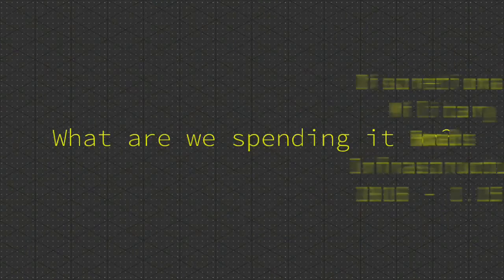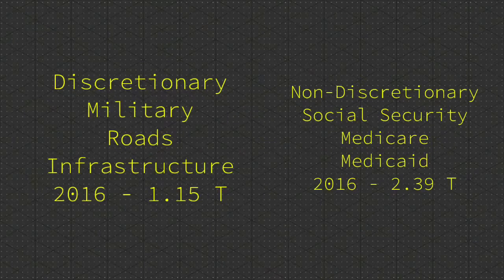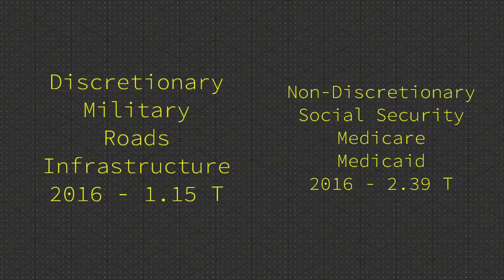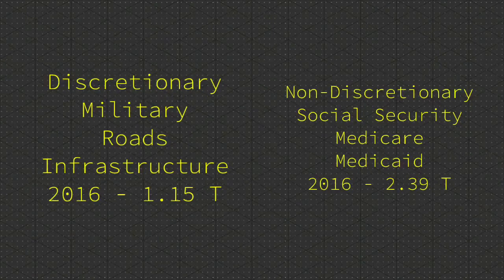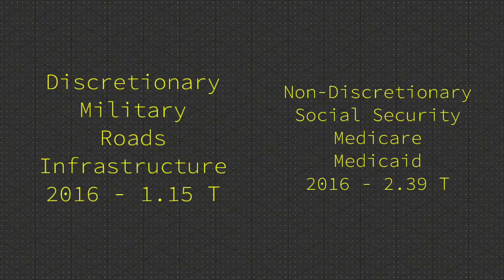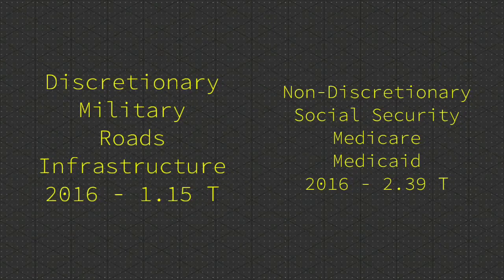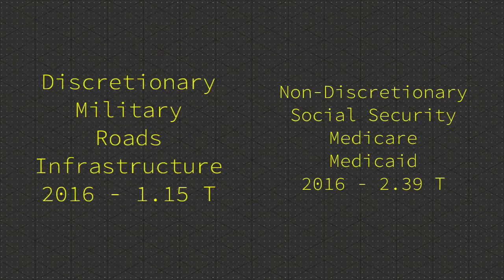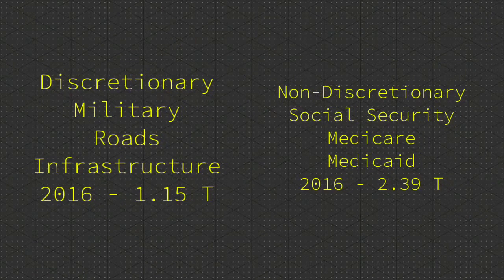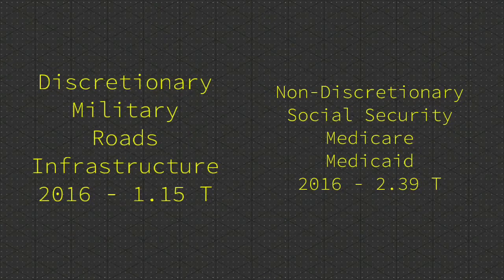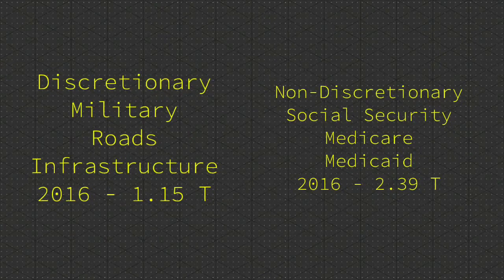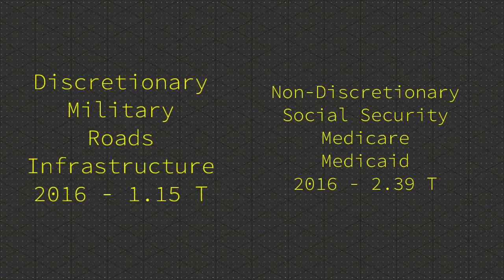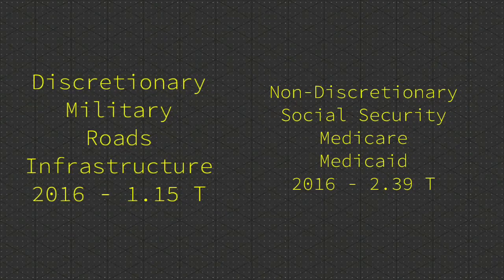So what are we spending all this money on? There are two types of spending. Discretionary spending, which Congress must appropriate before it gets spent — including military, roads, and infrastructure — totaled one point one five trillion dollars in 2016. Non-discretionary spending consists of open-ended commitments such as Social Security, Medicare, and Medicaid, and totaled two point three nine trillion dollars in 2016.